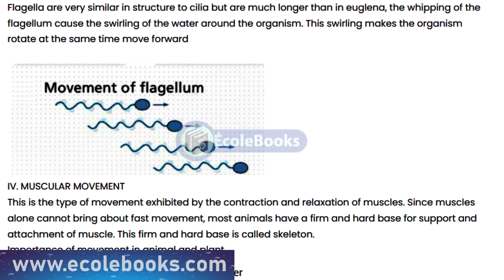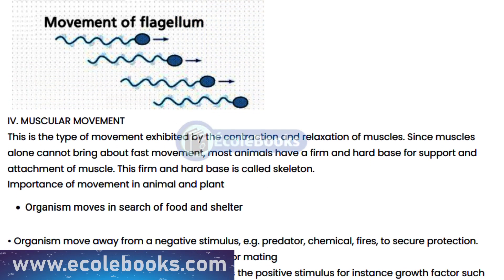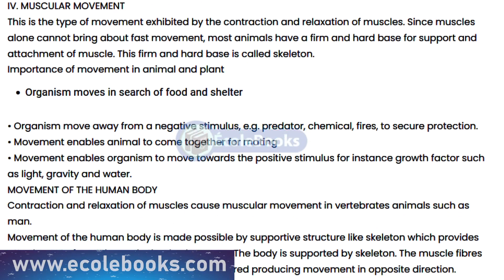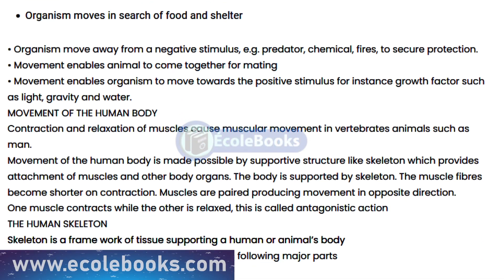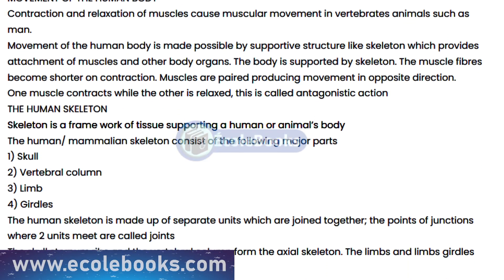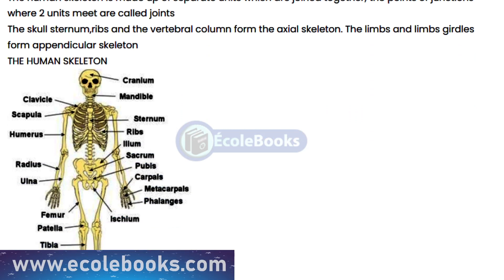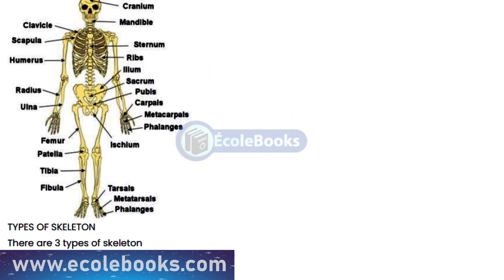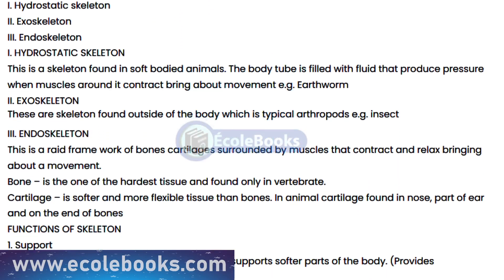Movement is essential for organisms to be able to respond to changes in the environment, and it is also essential for their survival. For example, plants use movement to orient themselves towards light and to avoid damaging objects. Animals use movement to search for food and to escape from predators.